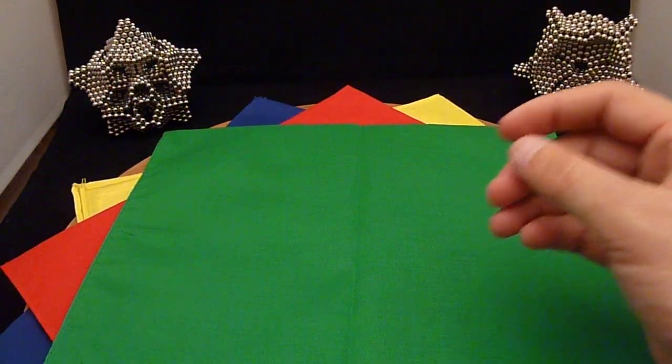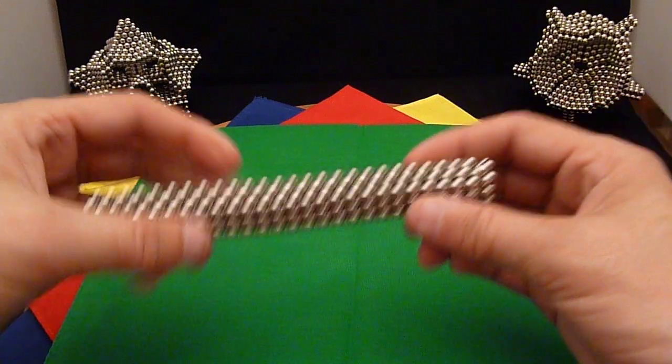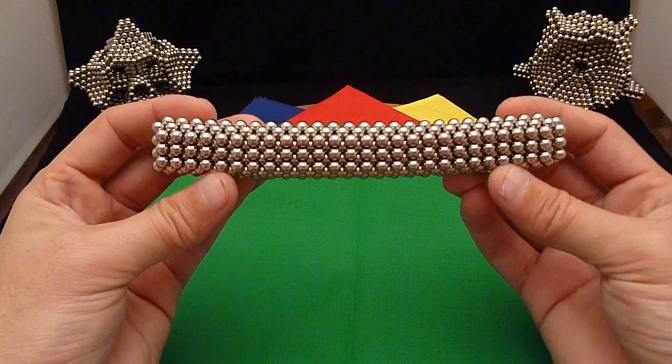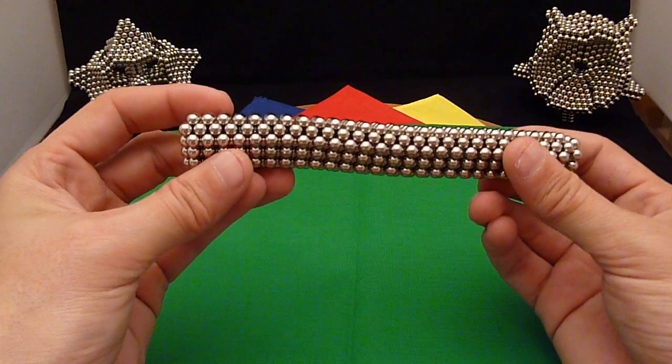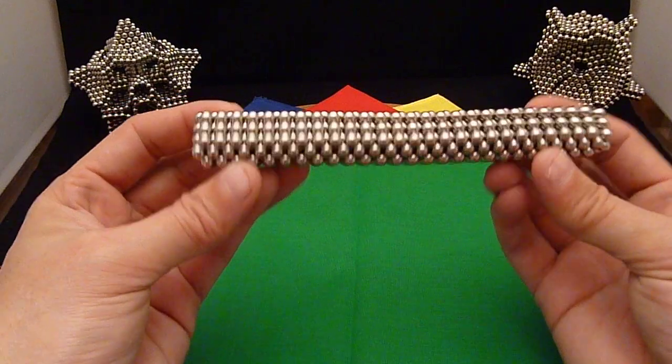I don't want to bore you with all the details of making that. So I've already put one together that's made up of 56 of the nine-ball circles. Every other one into a triangle, and then collapsed.